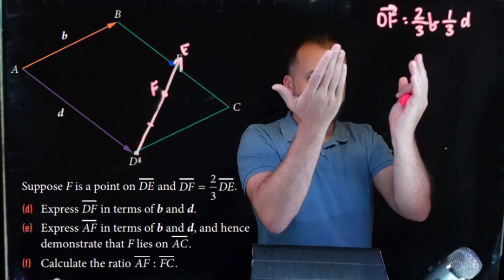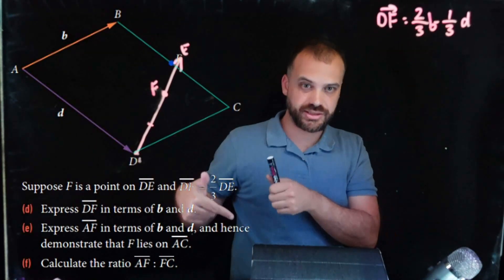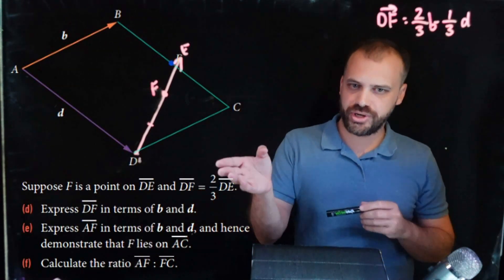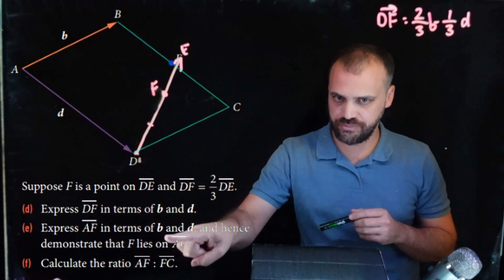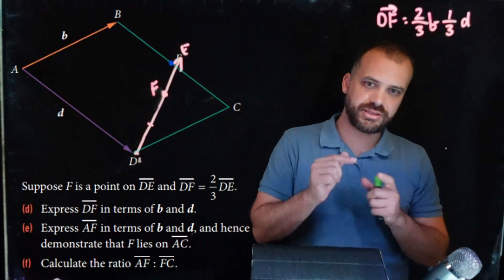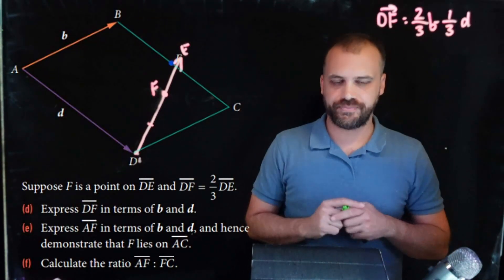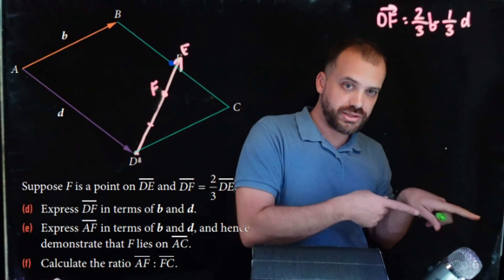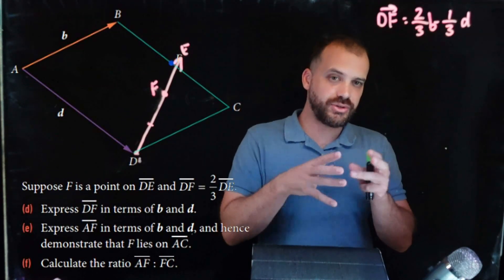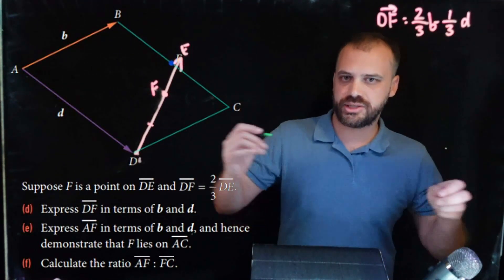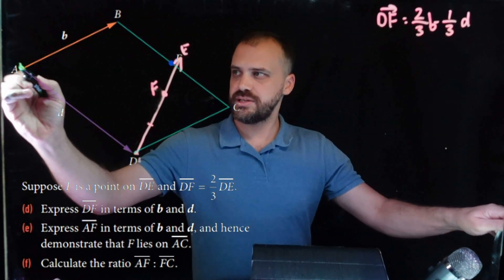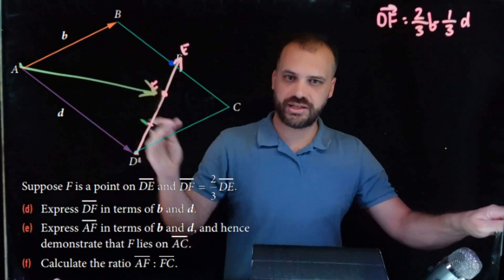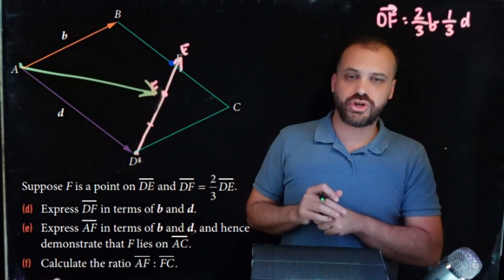Alright, so I've gotten rid of that working, but I think the result is going to be useful for our next step. That's usually how these questions work. So, let's do our next step. Express AF, express AF in terms of B and D, and hence demonstrate that F lies on AC. The and hence means using the information you just found, demonstrate this other thing. So, obviously I can't do the and hence bit until I've done the first bit. Express AF, so here's A, there's F, so AF.